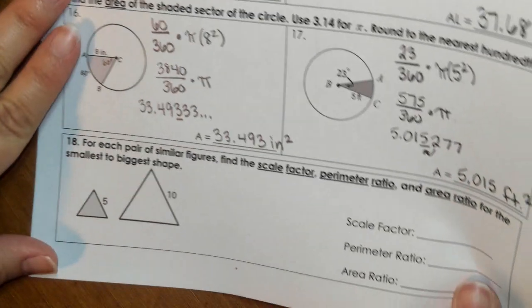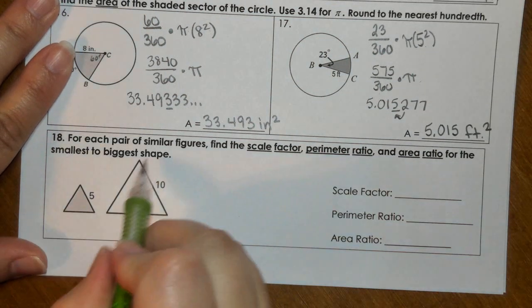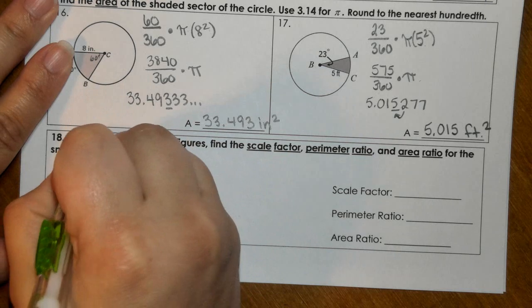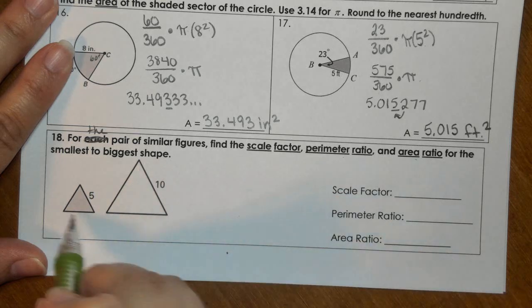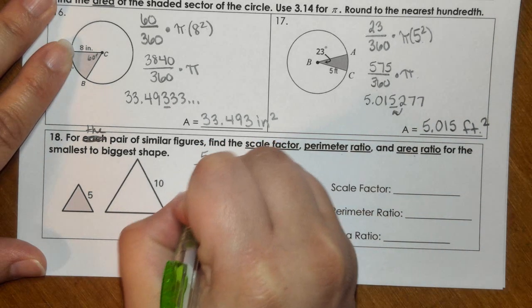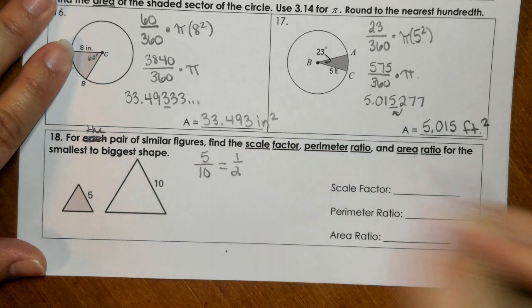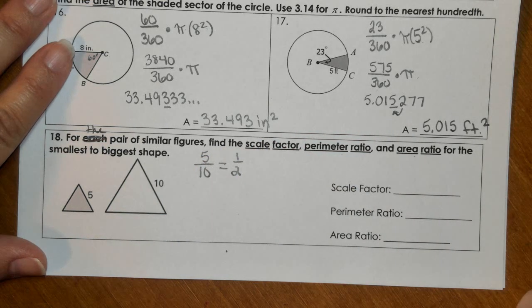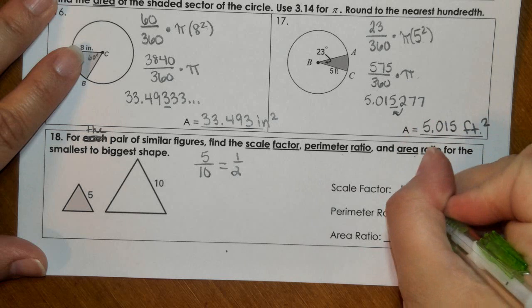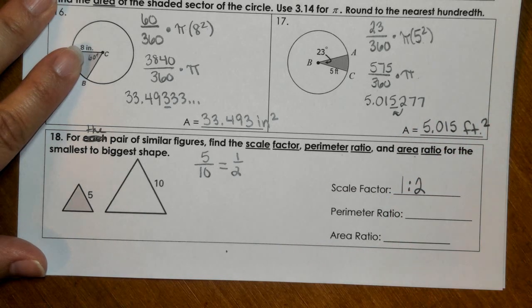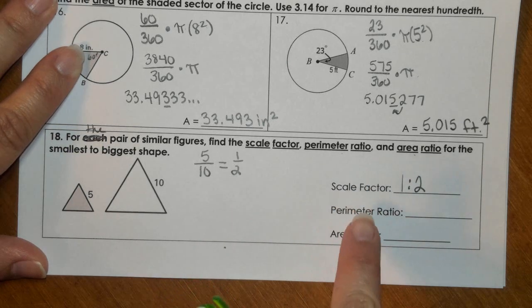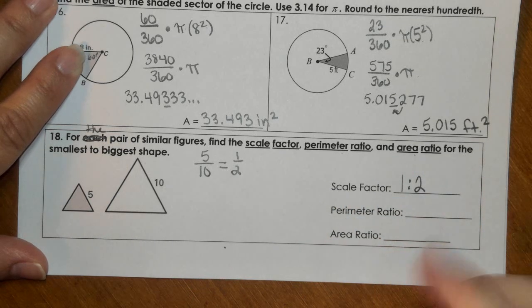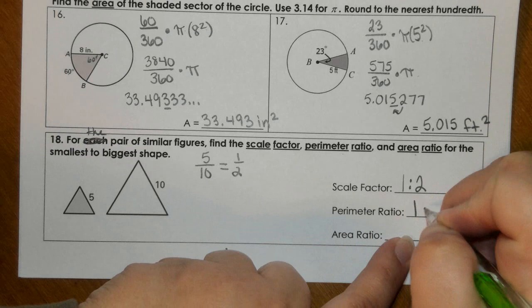Near the end, we have number 18. For each pair, for this one, for the pair of similar figures, find the scale factor, perimeter ratio, and area ratio for the smallest to biggest shape. So first, my scale factor would be 5 to 10, but we know that reduces to 1:5. I tried not to do fractions if I could get away with it. So I'm going to write that like this. Sometimes you will see fractions.